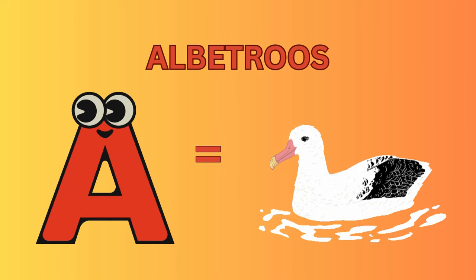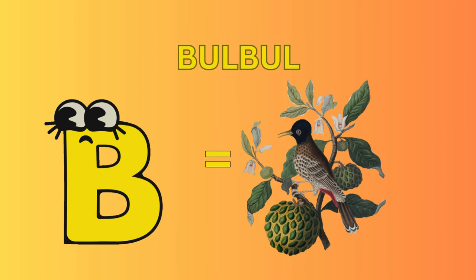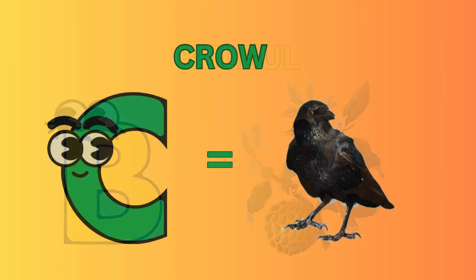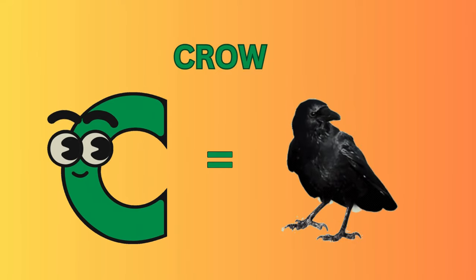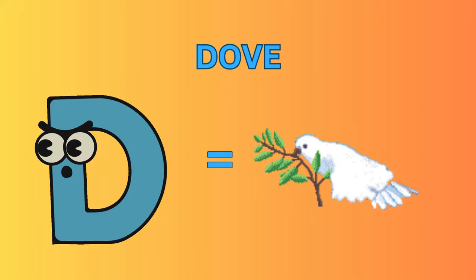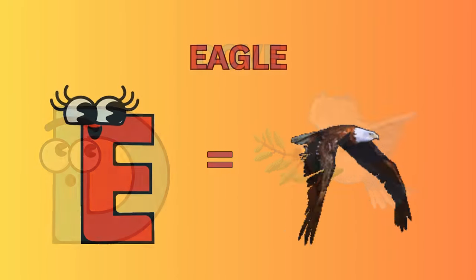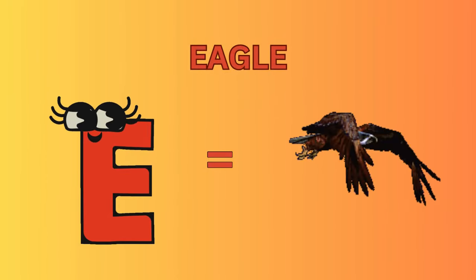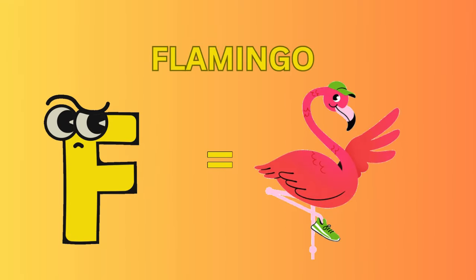A for Albatross. B for Bulbul. C for Crow. D for Dove. E for Eagle. F for Flamingo.